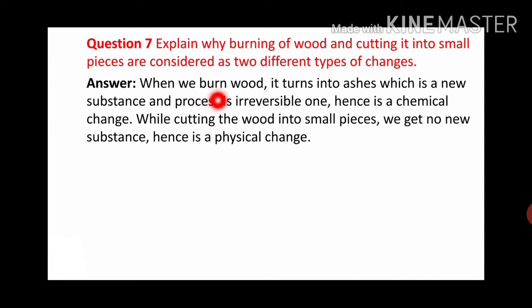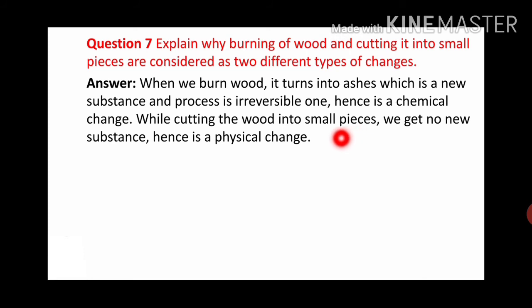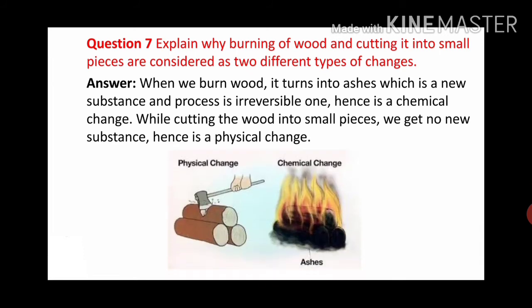When we burn wood, it turns into ash form, which is a new substance. We collect the ashes but cannot create wood back from them, so this is an irreversible process - that's why it is a chemical change. But when we cut wood into small pieces, no new substance is formed; only the shape changes. That's why we can say it is a physical change. This diagram shows physical change and this one shows chemical change.